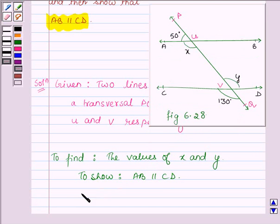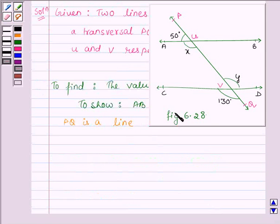From the figure we see that PQ is a line. Therefore, sum of angle PUA and x is equal to 180 degrees since they form a linear pair. So we have angle PUA plus x is equal to 180 degrees.